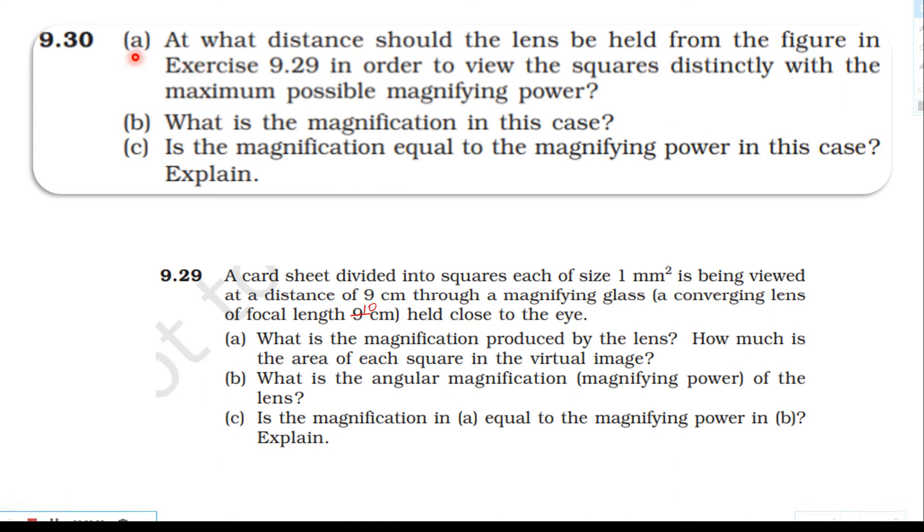From the NCRT textbook, from the topic Ray Optics and Optical Instruments, question 9.30a: At what distance should the lens be held from the figure in exercise 9.29 in order to view the squares distinctly with the maximum possible magnifying power?